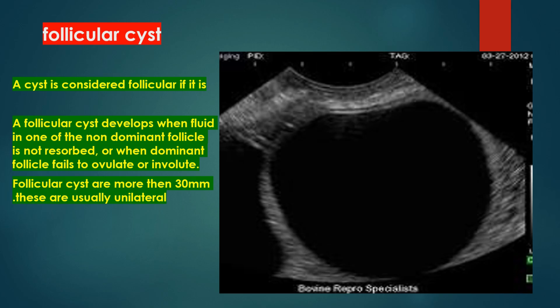Follicular cysts. A follicular cyst develops when fluid in one of the non-dominant follicles is not resorbed, or when the dominant follicle fails to ovulate or ovulate incompletely. Follicular cysts are more than 30 mm and are usually unilateral.